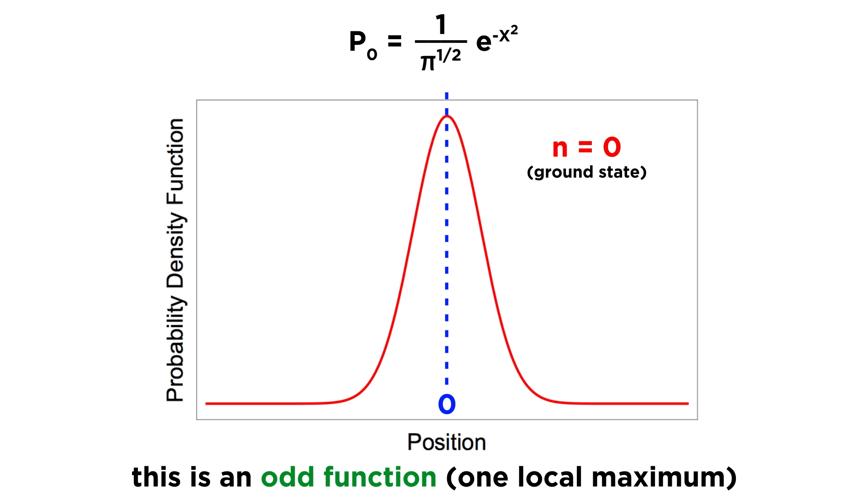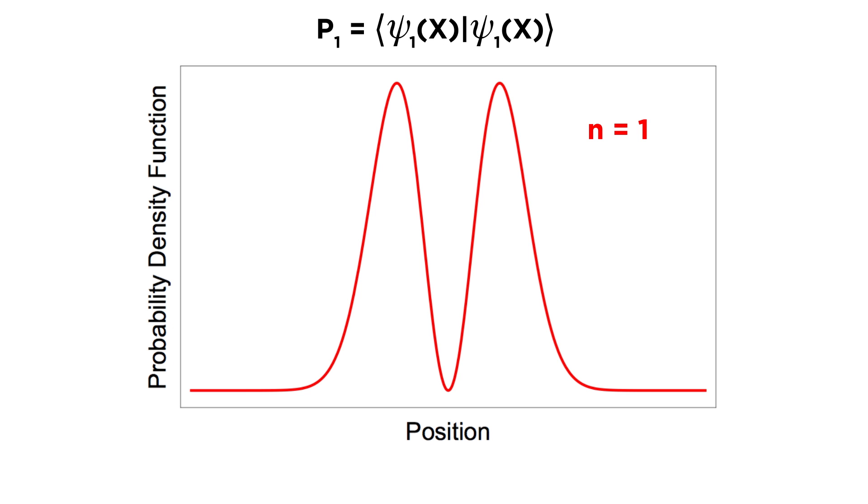We can do the same thing for other eigenstates, though in the interest of time we will not calculate them, but rather simply show them graphically so we can make general conclusions. So jumping up to n equals 1, we have the first excited state, and the probability density function is represented by p1. Rather interestingly, the particle can't be found at x equals zero.